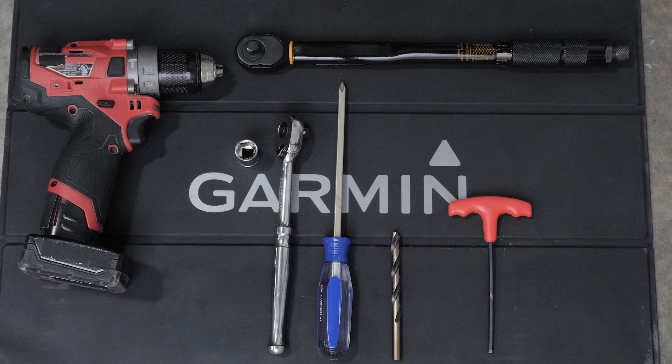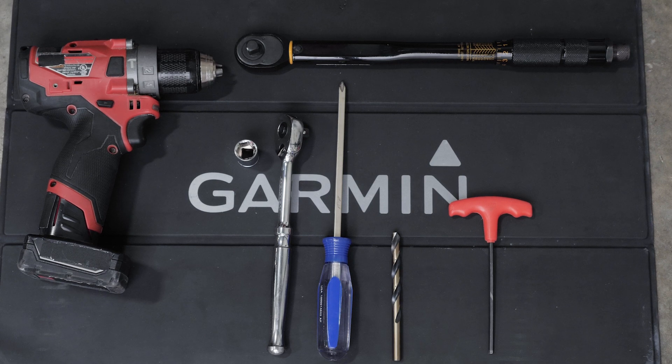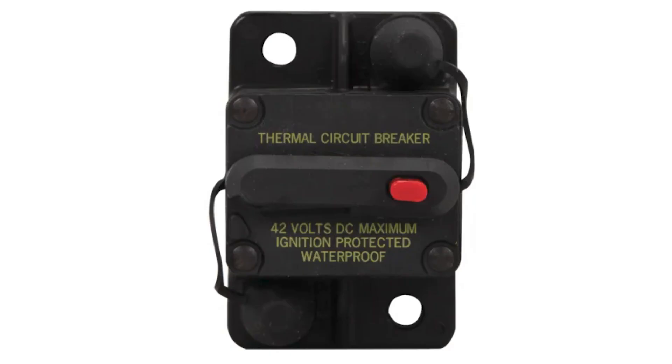a 9/16 inch or 14 millimeter socket, a torque wrench, and a circuit breaker rated for continuous 60 amps. Garmin recommends two people for this installation.